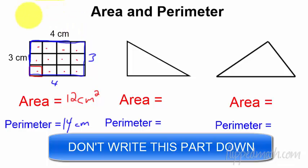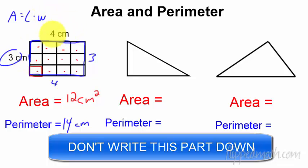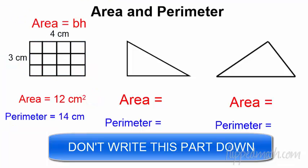You may have wondered: what's the shortcut for area? For rectangles, it's length times width, or base times height — either one works. Three times four is your area. Then add up all your sides for your perimeter. So the area is base times height or length times width. Why do we do that? Well, it relates directly to the triangle.